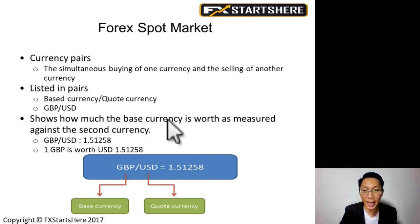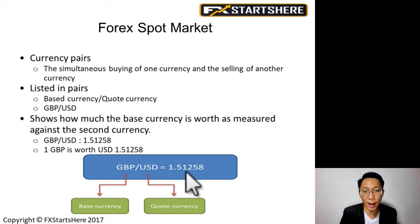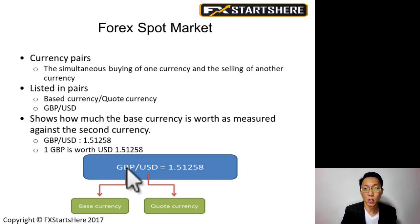The pair shows how much the base currency is worth as measured against the quote currency. So GBP/USD equals 1.51258 — this means that 1 British pound is worth 1.51258 US dollars. For every 1 pound, you can exchange it for 1.51258 US dollars.